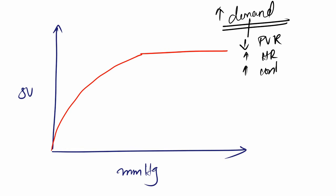During increased demand, I am going to have decreased peripheral vascular resistance and increase in heart rate, increased inotropic effect. In such a case, the curve shifts upwards and left like this.